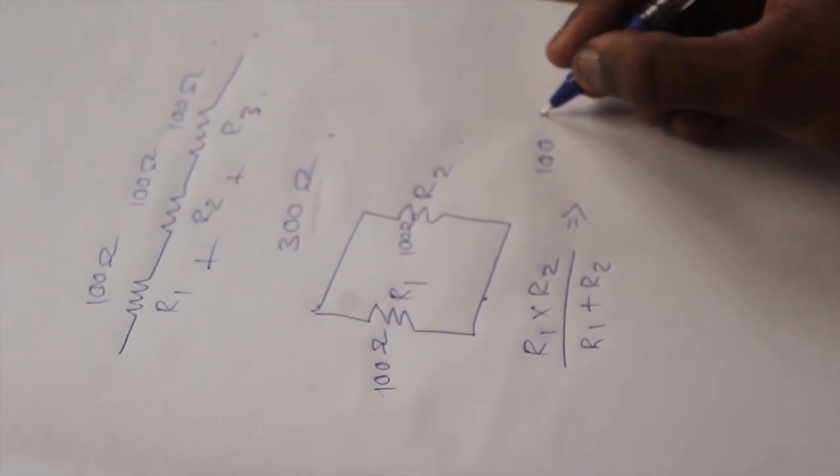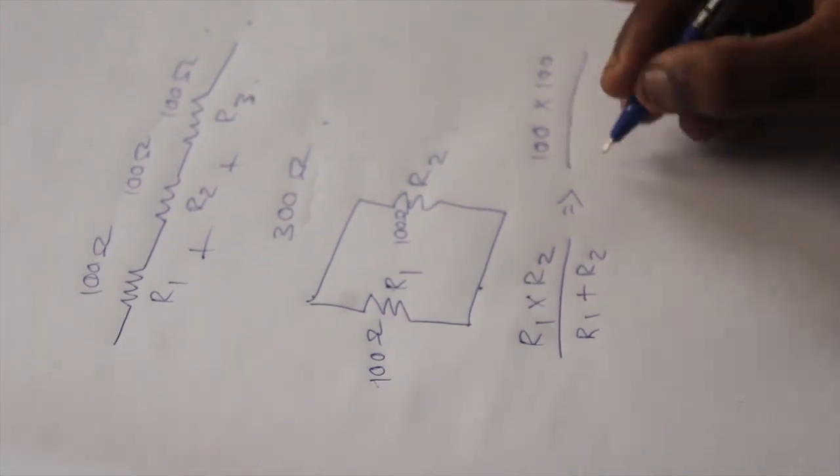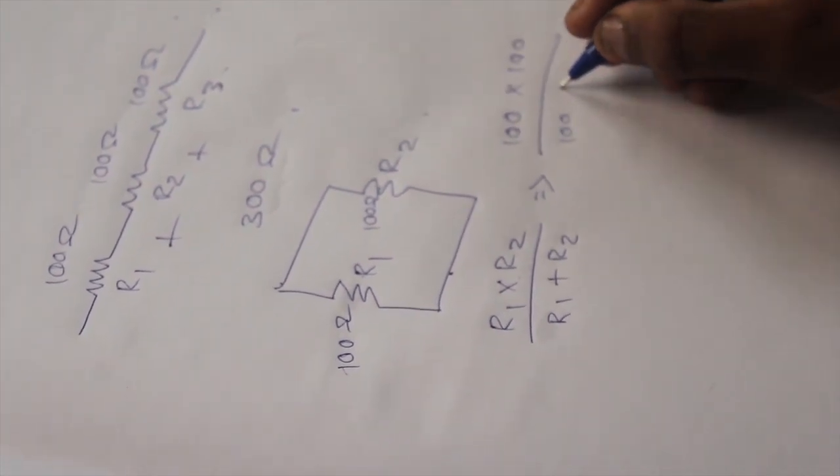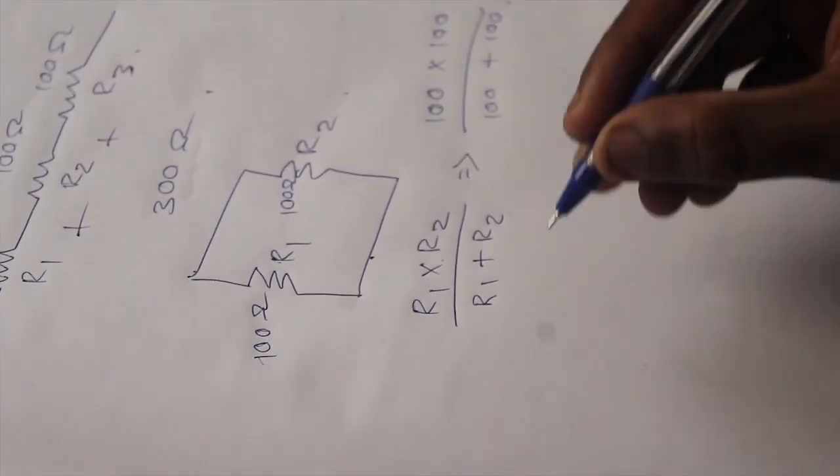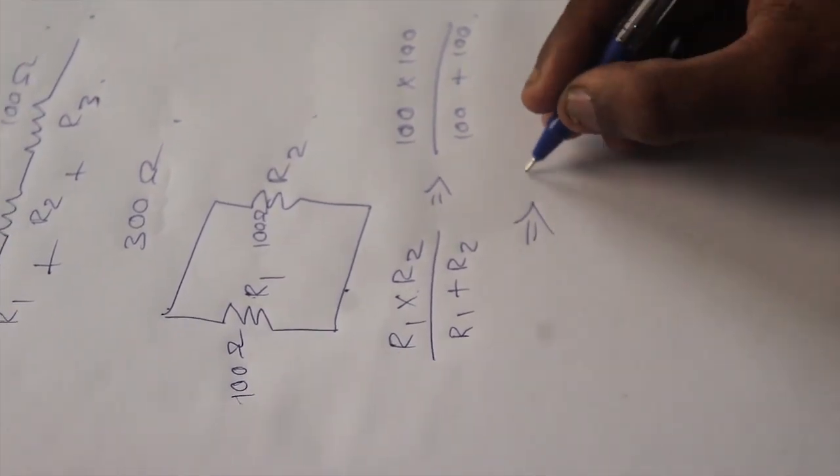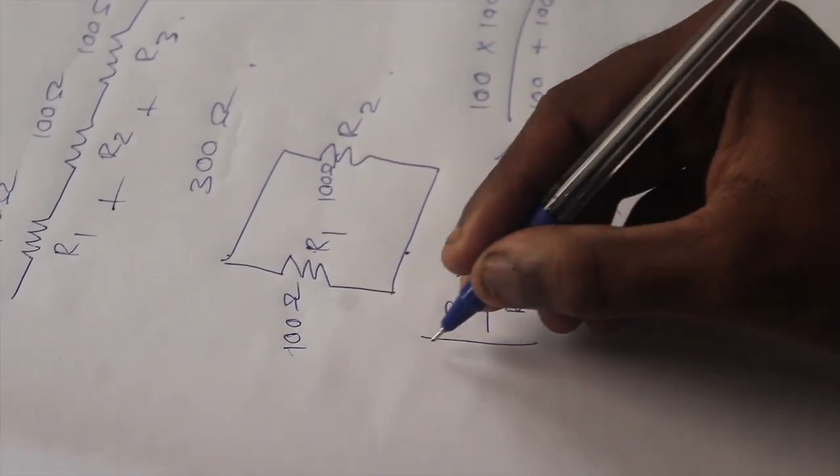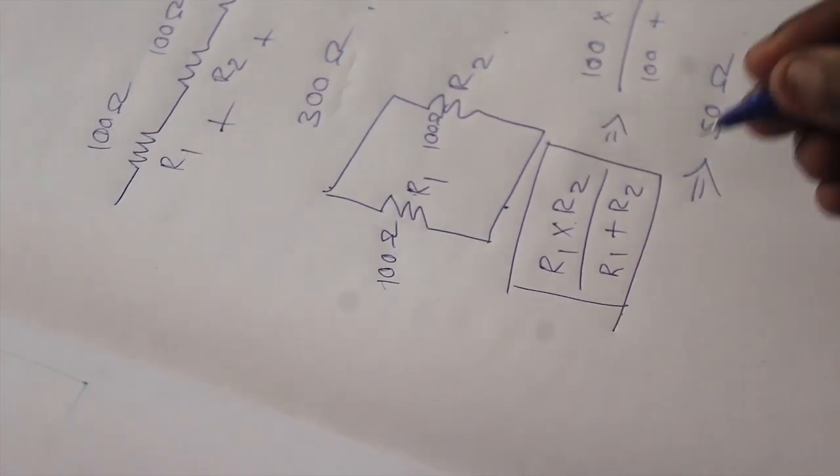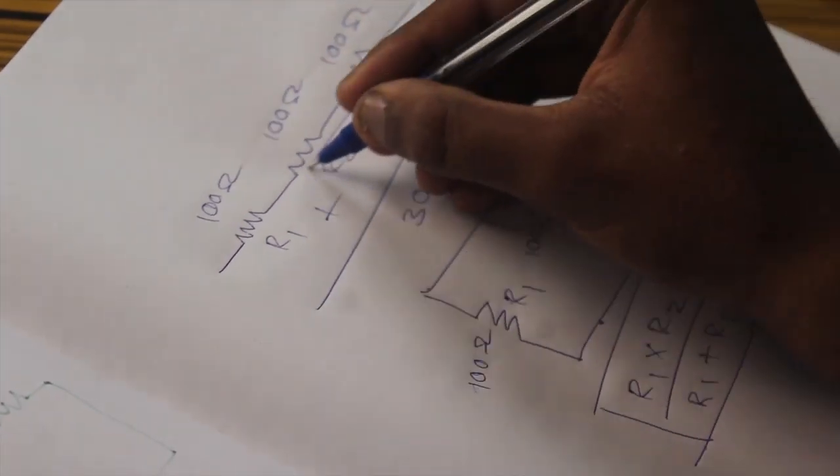You can substitute the values directly, 100 into 100 divided by 100 plus 100. You will get 50 Ohm. This is the formula to calculate the parallel resistance and this is the formula to calculate series resistance.